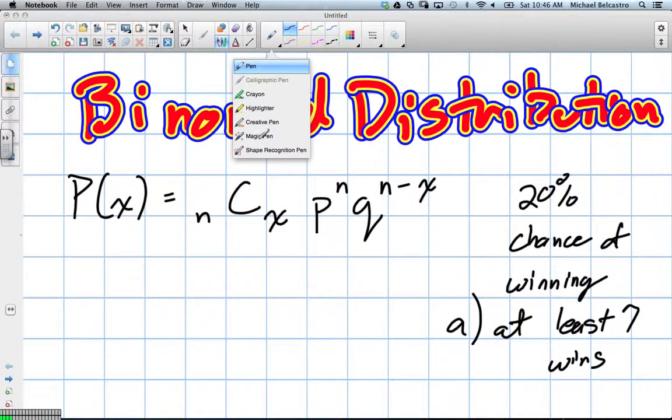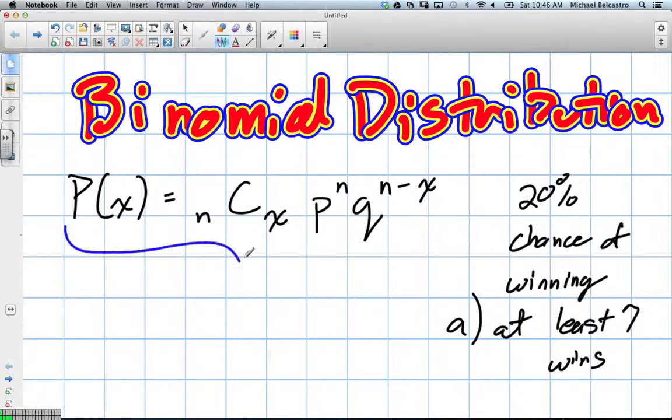Okay, so we're going to go over binomial distribution, which is this formula here. And it's going to help us calculate your chances of winning prizes in a lottery. So let's say it's Tim Hortons or some coffee place. You have a 20% chance of winning when you roll up the rim for something.